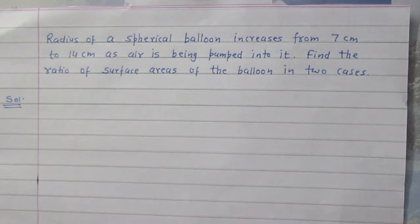Radius of a spherical balloon increases from 7 cm to 14 cm as air is being pumped into it. Find the ratio of surface areas of the balloon in two cases.